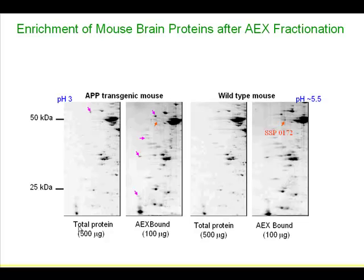A good thing about the IEX column is that it's compatible with urea and thiourea, because those are uncharged. You can still extract proteins in urea and thiourea and then fractionate them on the IEX column.